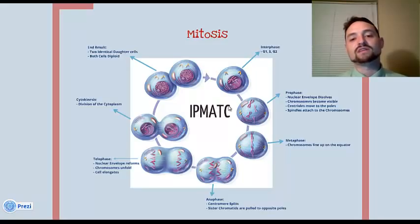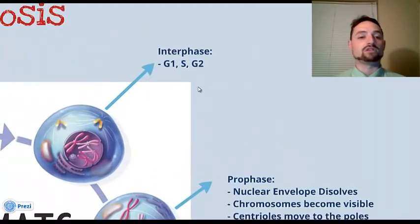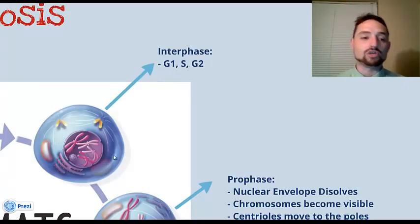IPMATC. And there's a couple different ways that you might be able to—mnemonic devices you might be able to come up with. But let's look at these now individually. So the first is interphase. Remember, interphase is G1, S, G2. It's just a normal cell with all of its stuff there, and it's ready now for division.